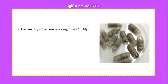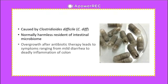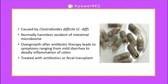C. diff-associated diarrhea is caused by Clostridioides difficile, which is normally a harmless resident of the intestinal microbiome. Overgrowth, caused by the use of antibiotic therapy, can lead to symptoms ranging from mild diarrhea to deadly inflammation of the colon. It can be treated with narrow-spectrum antibiotics specific to this bacterium or a fecal transplant to restore the normal microbiome.